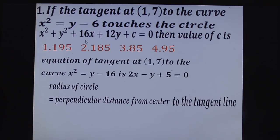So here, radius is square root of 8² + 6², that is 64 + 36 = 100 minus c. Square root of 100 - c equals perpendicular distance from center. The center of the circle is (-8, -6).